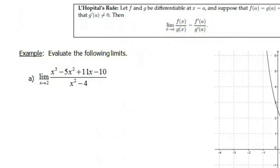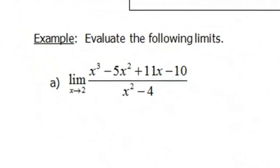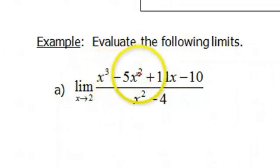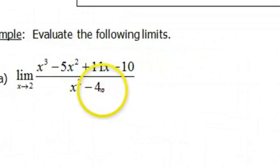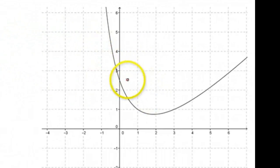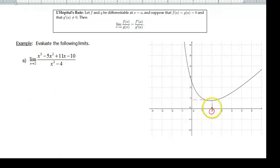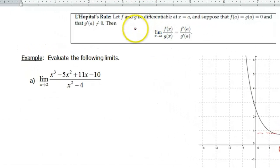So the first function we are gonna look at today is x cubed minus 5x squared plus 11x minus 10 all over x squared minus 4. I went ahead and graphed that in GeoGebra and I include the graph here. Today we're gonna take a look at the limit as x approaches 2. So looking at GeoGebra here, here's x equals 2. If we were to eyeball our limit, I don't know, it's something less than 1, somewhere maybe bigger than a half but less than 1, kinda hard to tell.